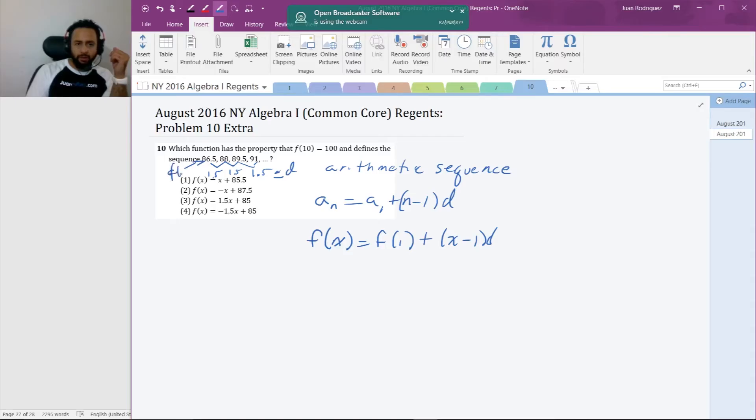So it's equal to 86.5 plus x minus 1 times 1.5. I distribute the 1.5 in, and I got 86.5 plus 1.5x minus 1.5. 86.5 minus 1.5 is 85, so 1.5x plus 85.